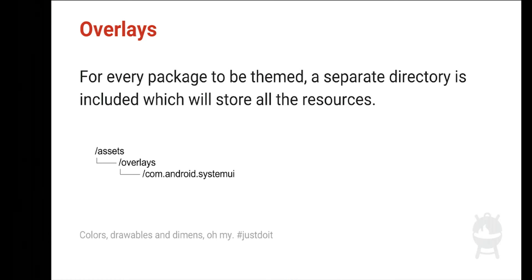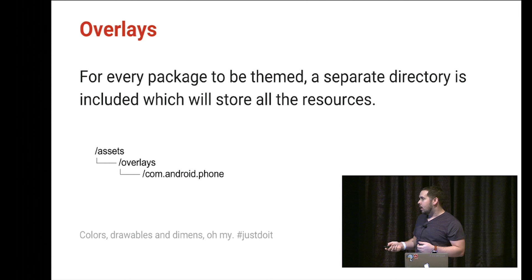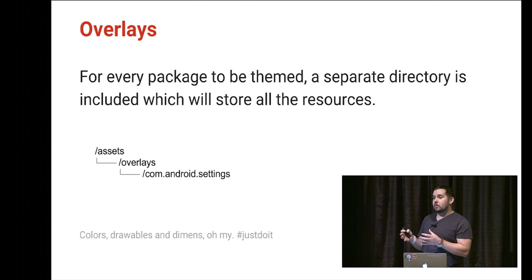Now let's talk about overlays. For every package on the user's device there are resources specific to that package. The theme breaks these down in a tree structure with assets and overlays, where each app's package name — like com.android.systemui, phone, or settings — becomes a separate overlay directory housing resources specific to that app.